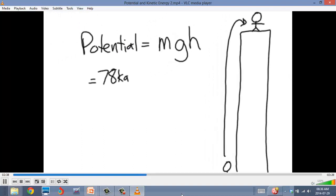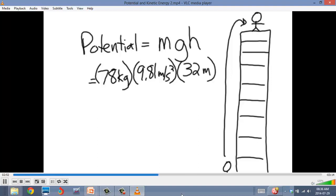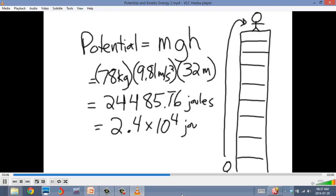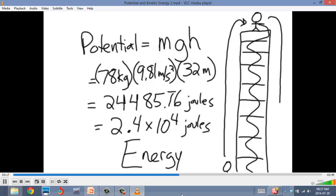We have to know the acceleration due to gravity, or g, which is negative 9.81 meters per second squared. And then we have to convert that 10-story building into meters. And so a 10-story building is roughly 32 meters high, or that's our h value. And so if we simply multiply those all together, we get 24,485.76 joules. And if we do significant digits, that's 2.4 times 10 to the fourth joules of energy that my body has at the top of a building. And as long as I stay at the top of that building, I can use that on the way down. I don't want to jump off the top because I don't think I'd be able to make it.